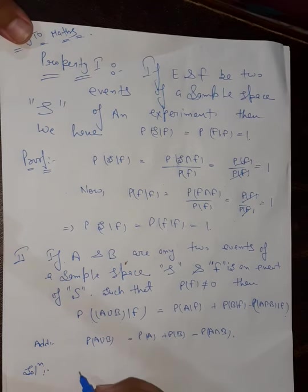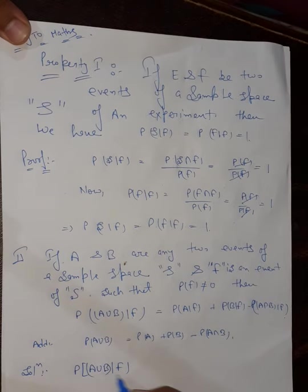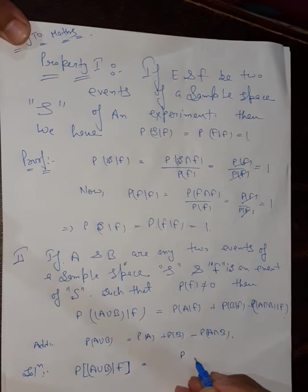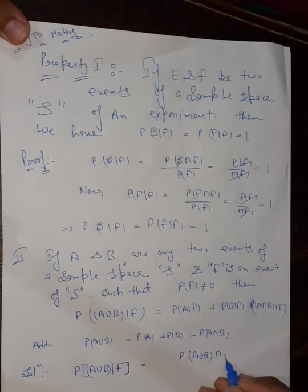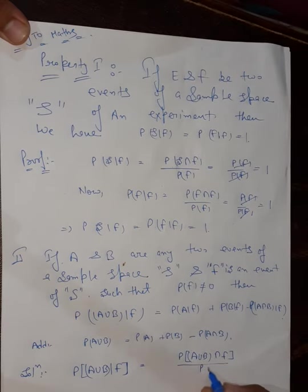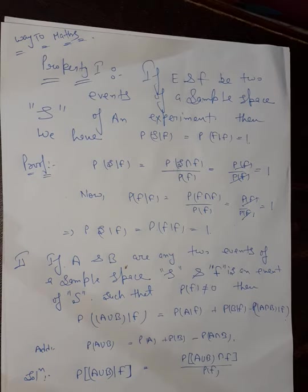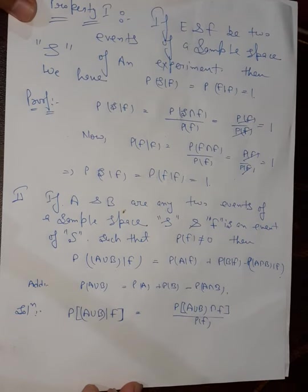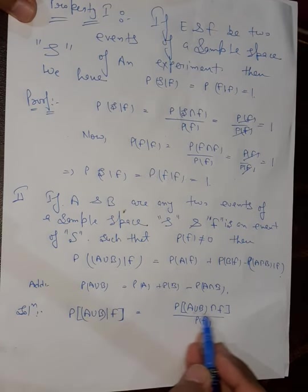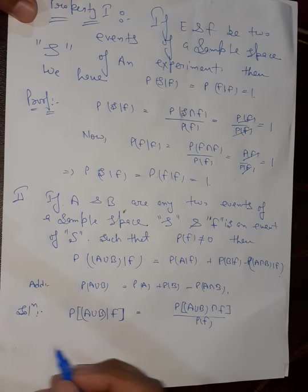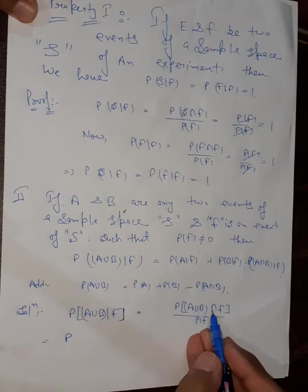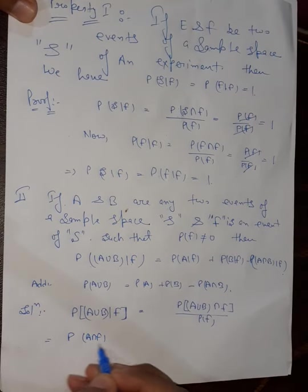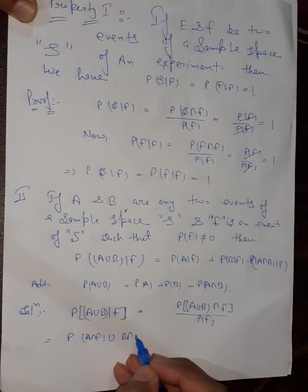Solution: P(A∪B | F) equals P((A∪B) ∩ F) over P(F), according to the formula. Now applying the distributive property from Plus 1 class: (A∪B) ∩ F = (A∩F) ∪ (B∩F). So the numerator becomes P((A∩F) ∪ (B∩F)) over P(F).